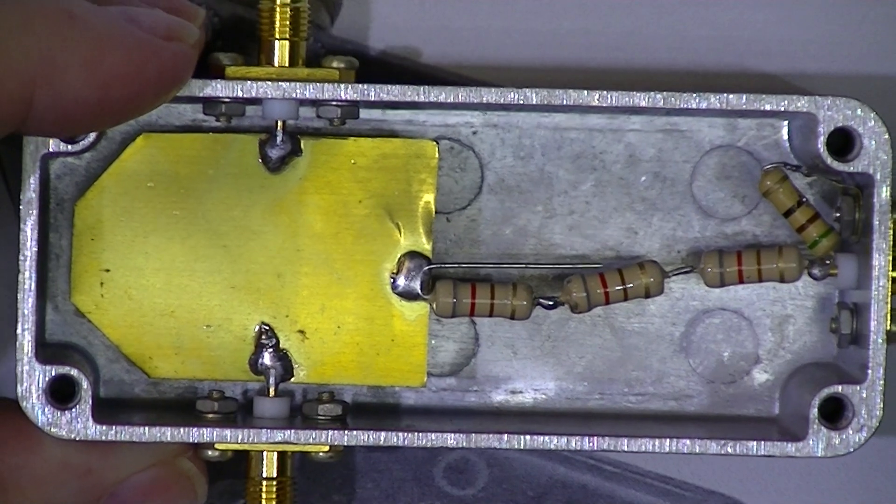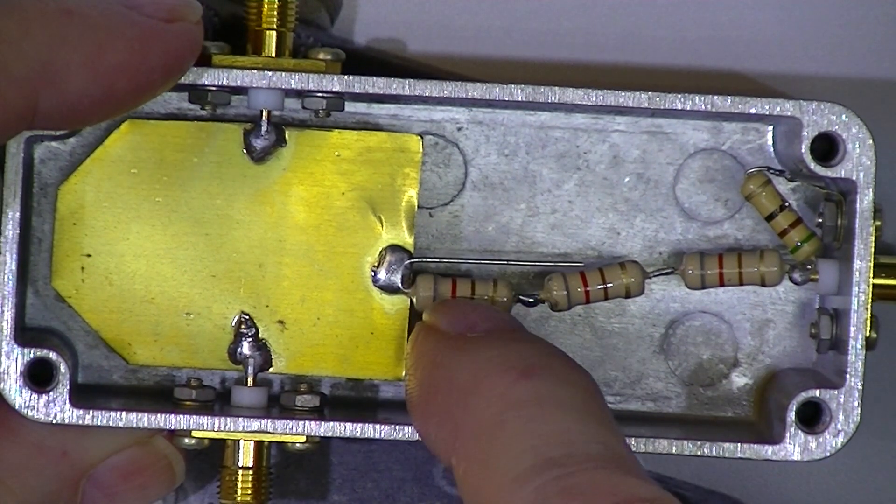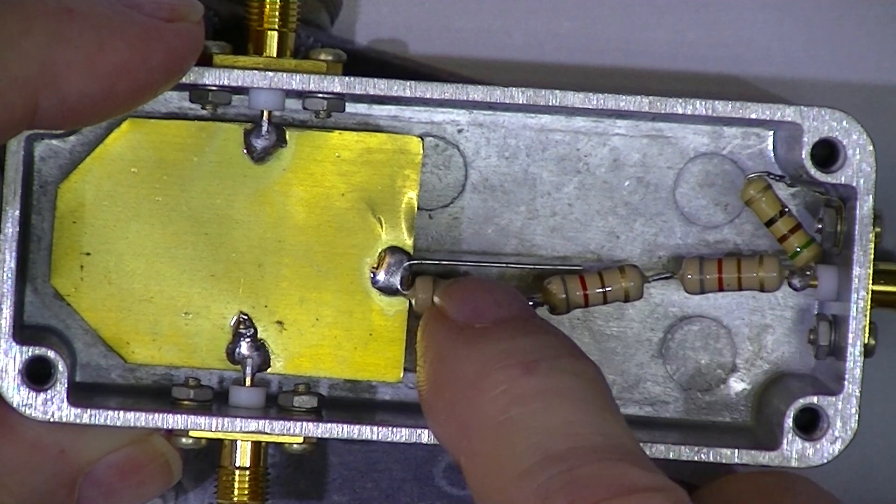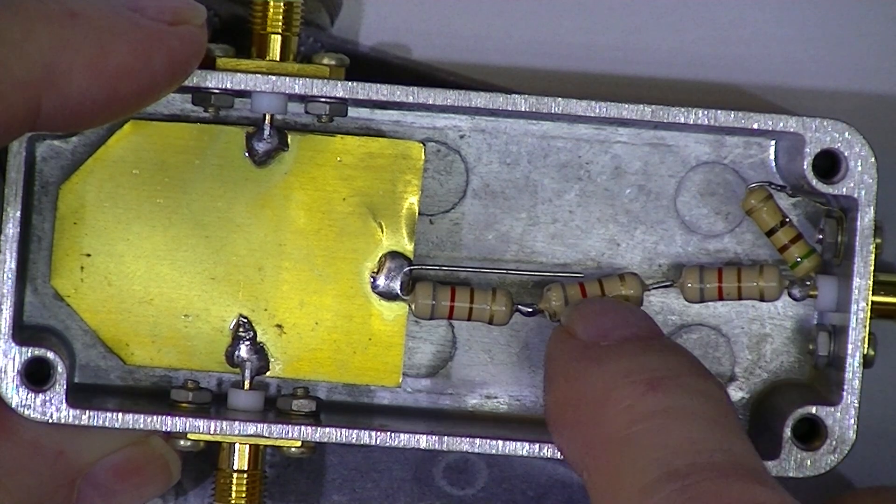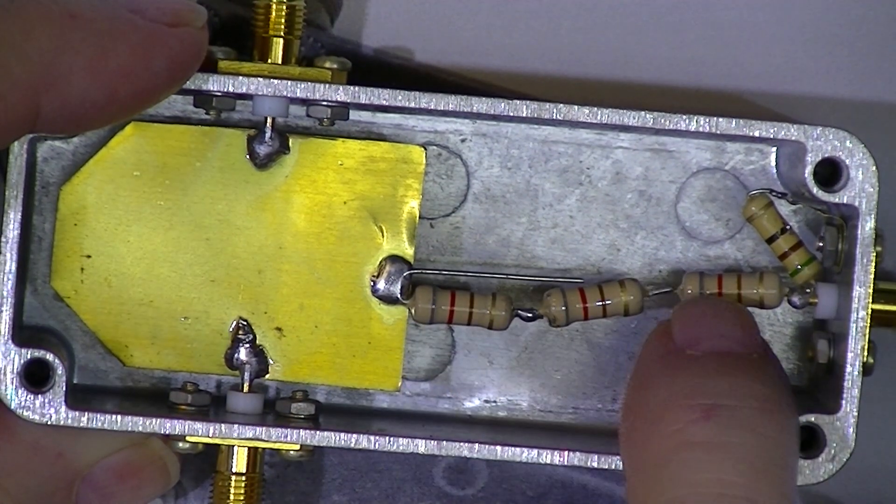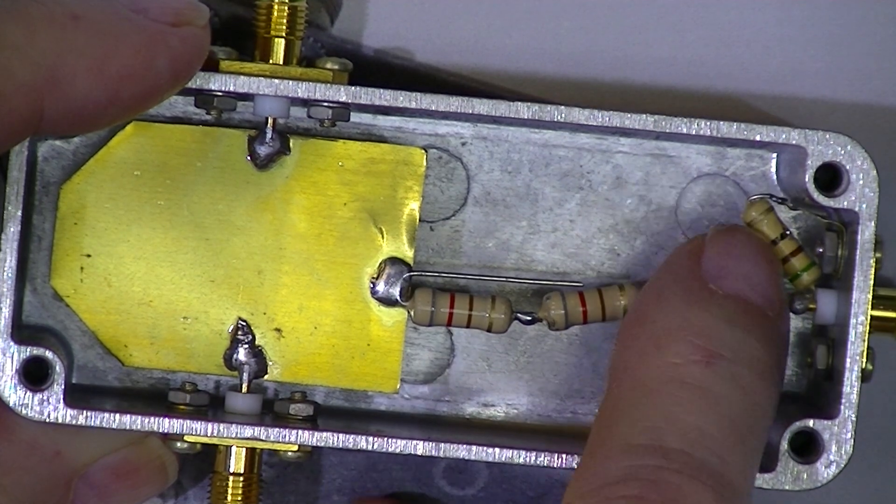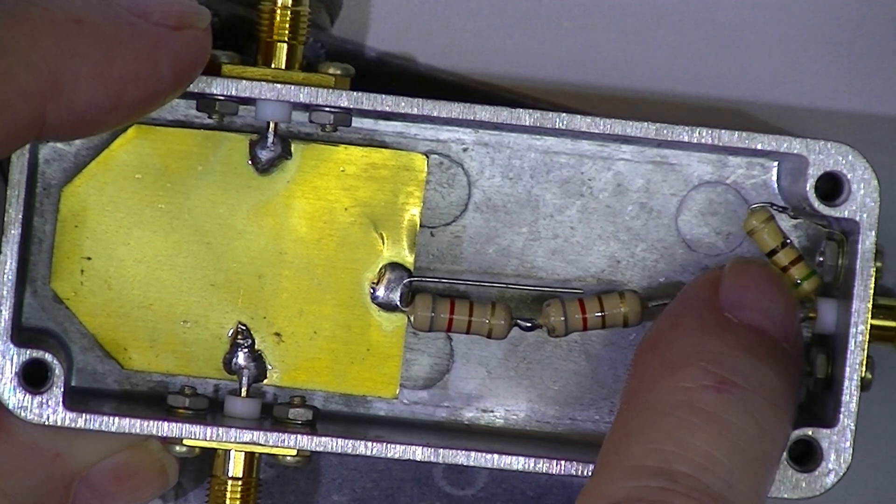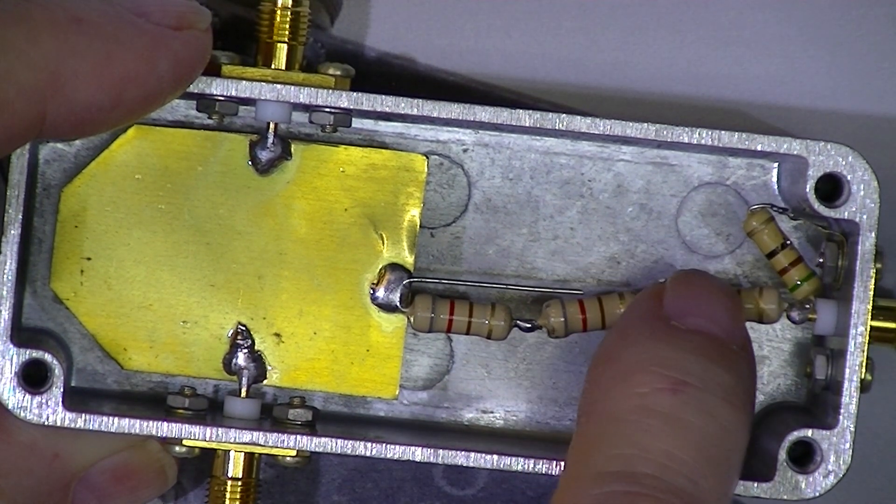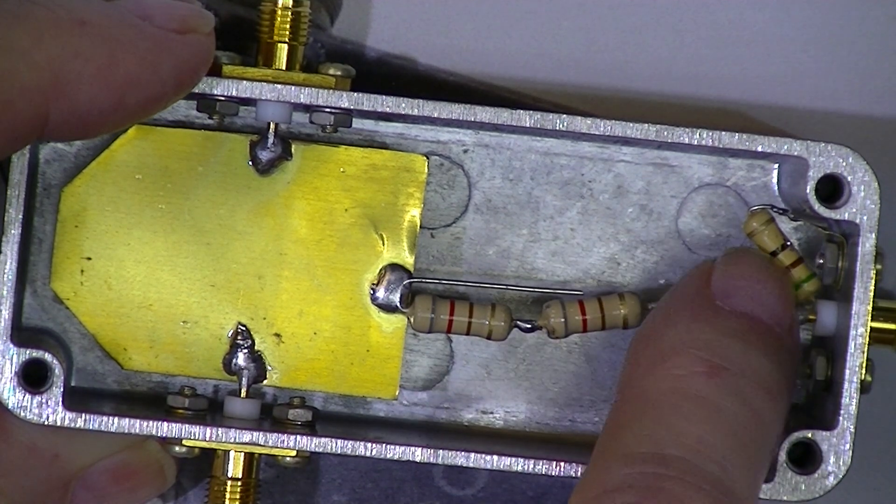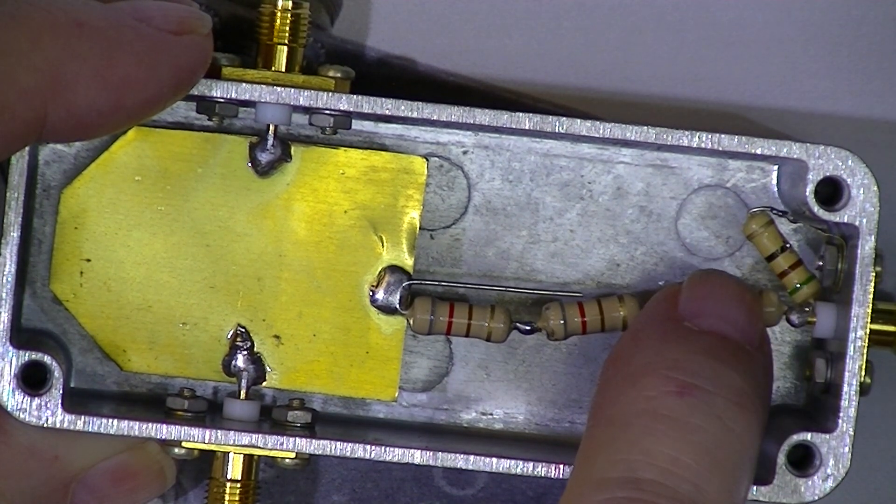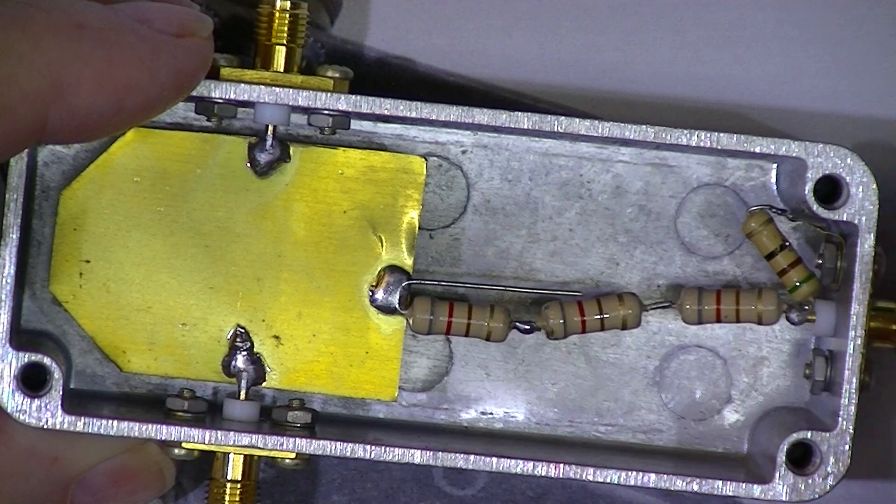The other thing I would do, I would buy, I'd stay with the 1 watt resistors, but I would buy 1% resistors. And for this termination resistor, I'd use a half a watt resistor instead of a 1 watt resistor. It physically would fit better.